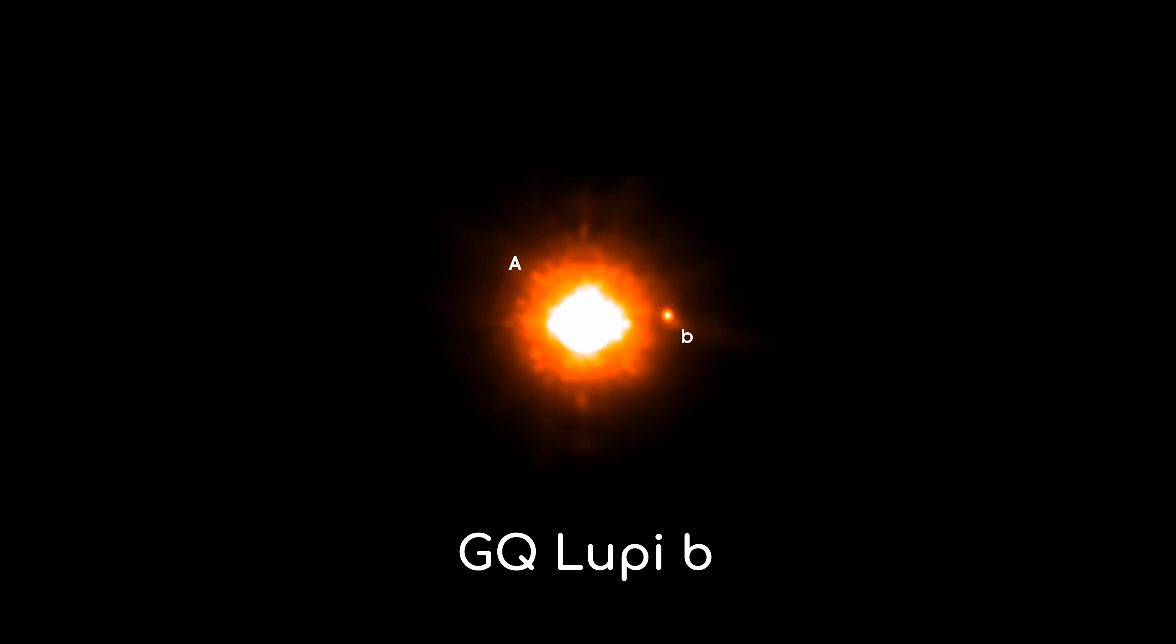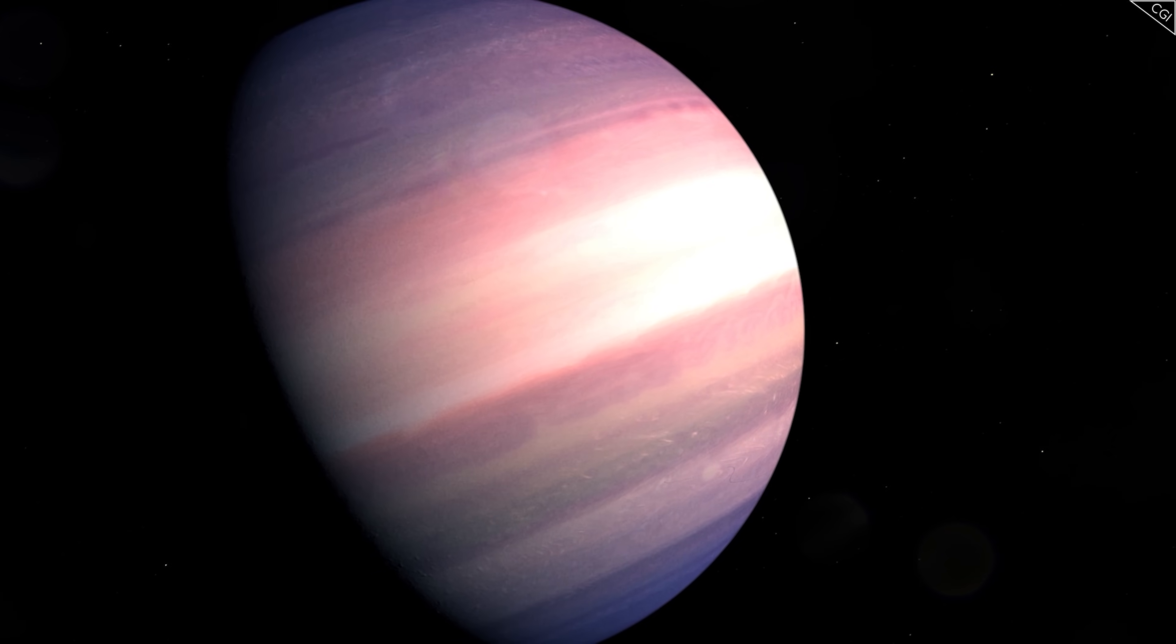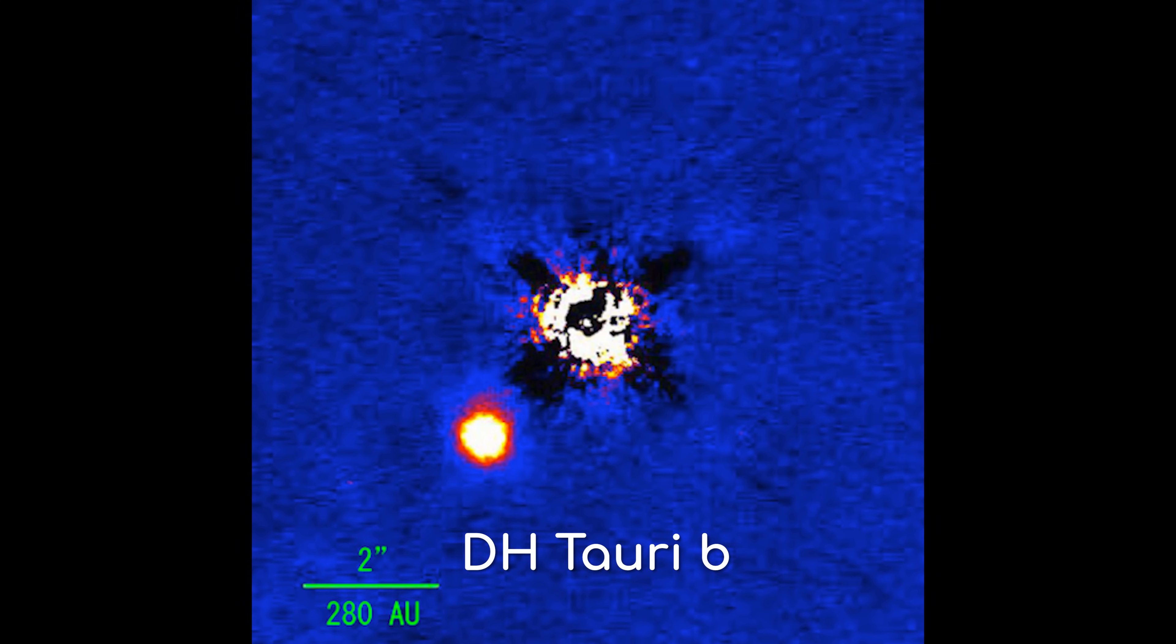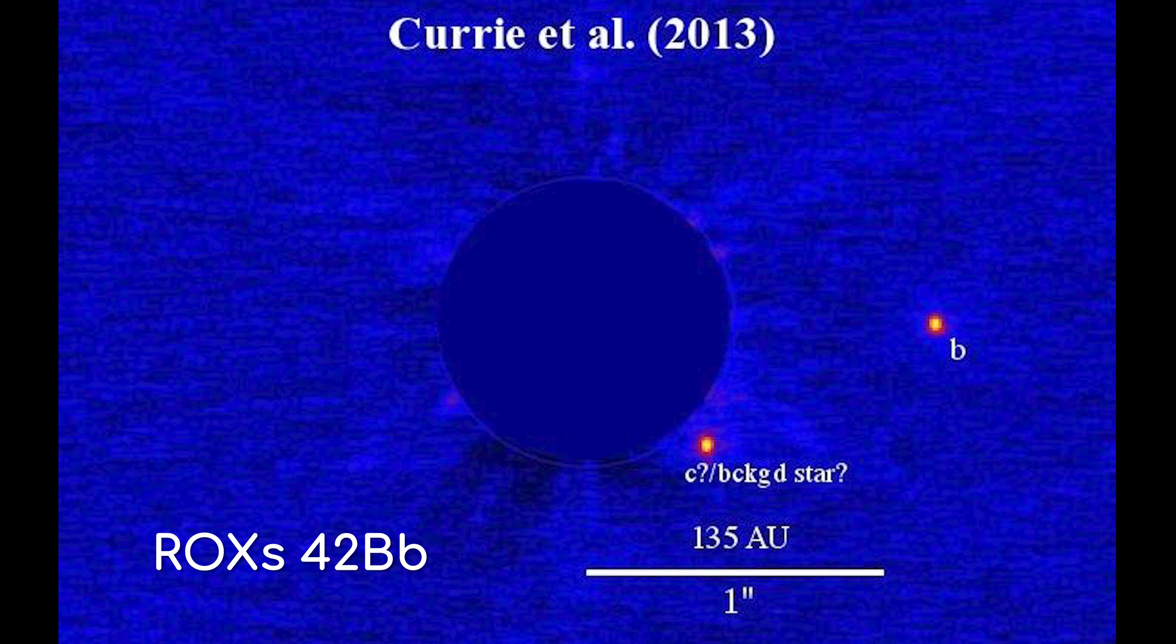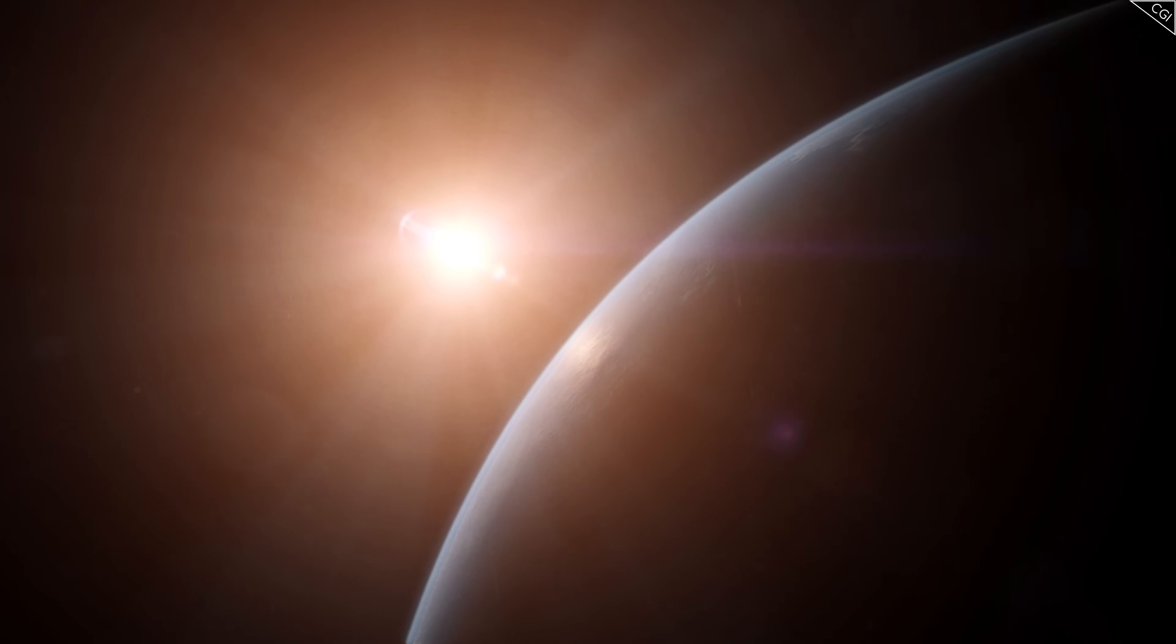The answer is most likely GQ Lupi B. It is another directly imaged exoplanet, which again means we don't have a good grasp on its physical characteristics. From the margins of error involved, it could be a brown dwarf, but it's probably the largest exoplanet that we know of. Scientists have estimated its radius to be three times the size of Jupiter, but again there are margins of error involved. Other contenders to this throne would be DHTori B and Rox 42BB. So, there we have it, some of the biggest exoplanets that we know of.